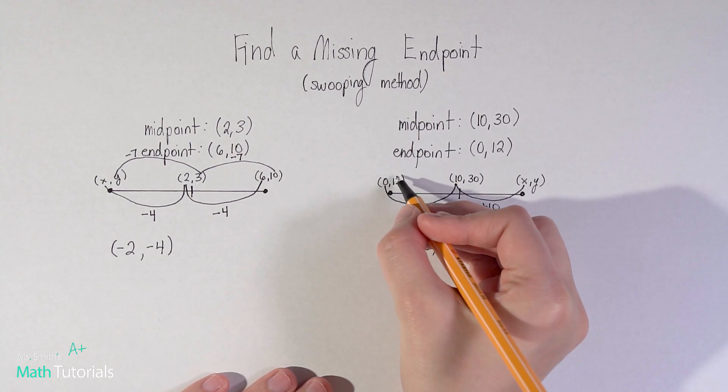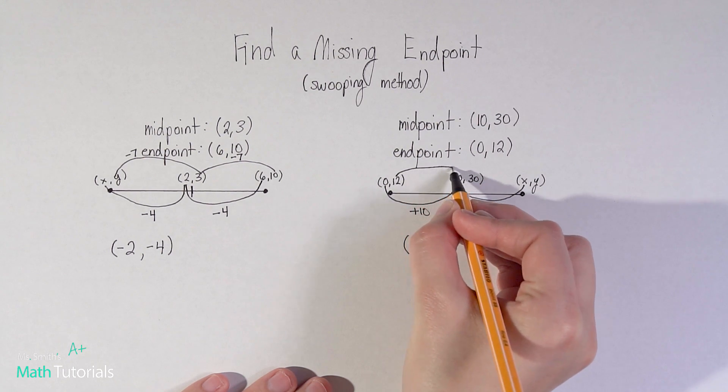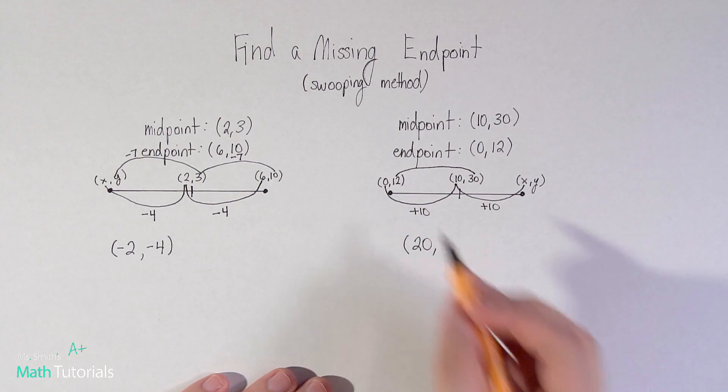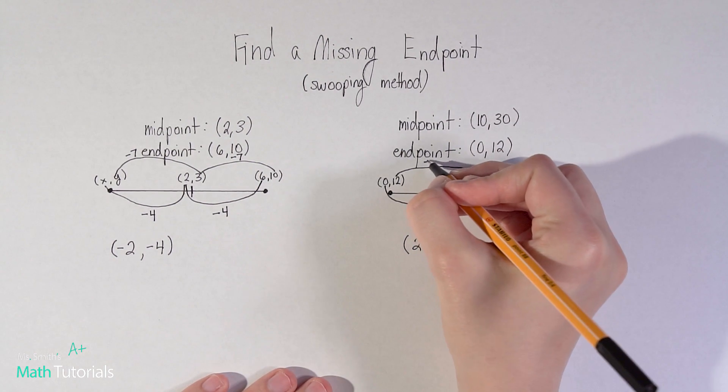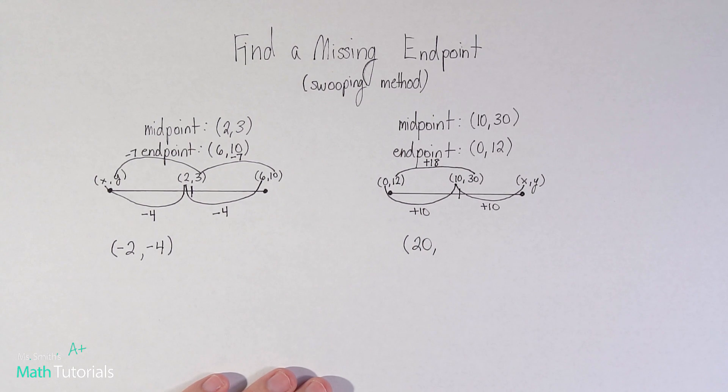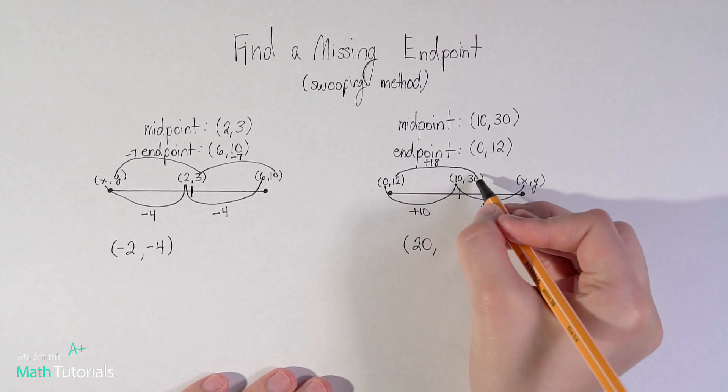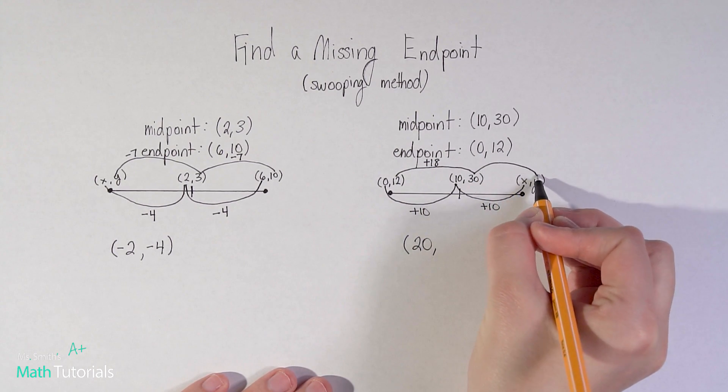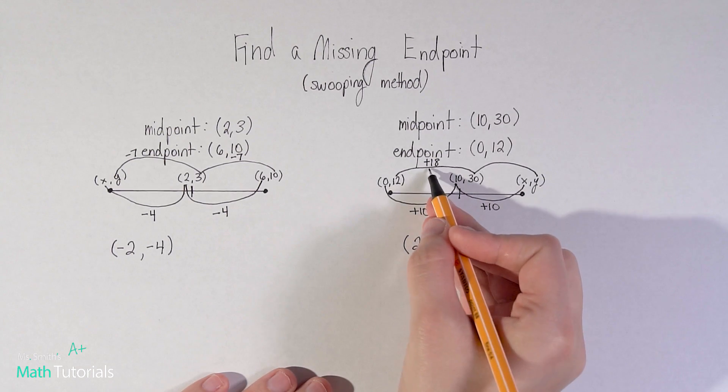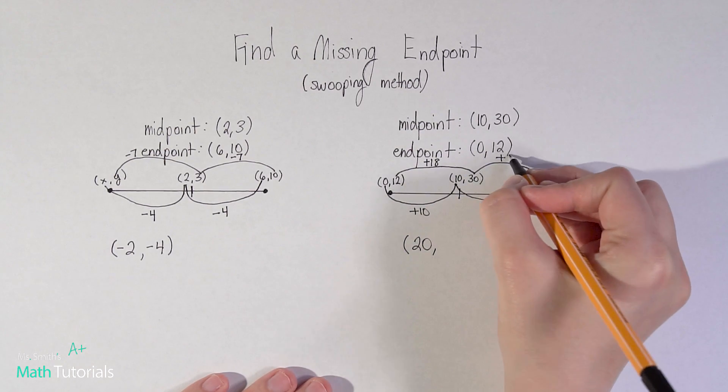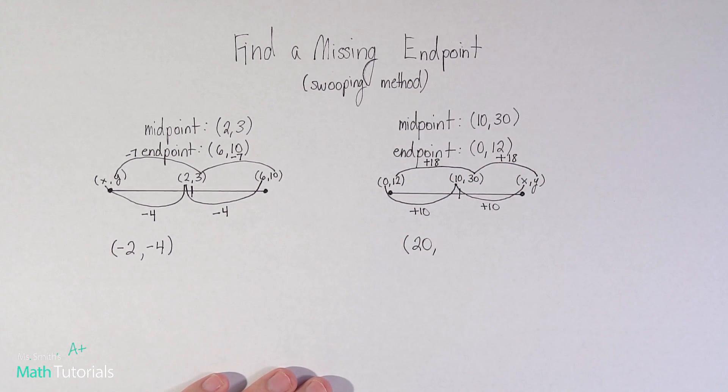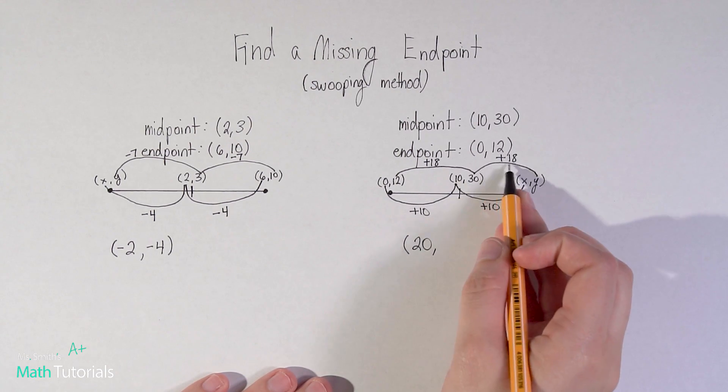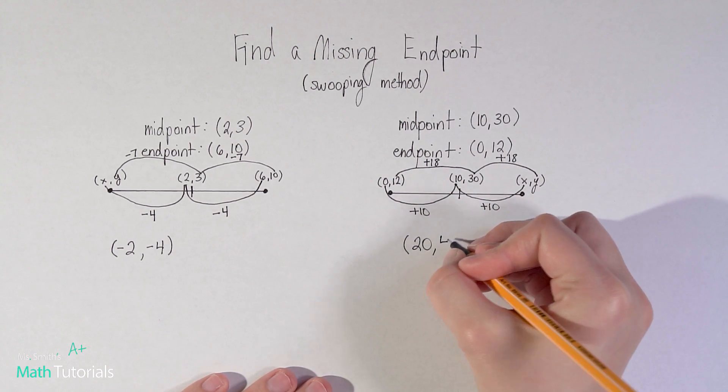Now from 12, so from one y value to the other, from 12 to 30, let me see what that would be: 30 minus 12. I added 18. And from 30 to my unknown y value, I'm going to repeat that same process, adding 18. So 30 plus 18 would give me 48.